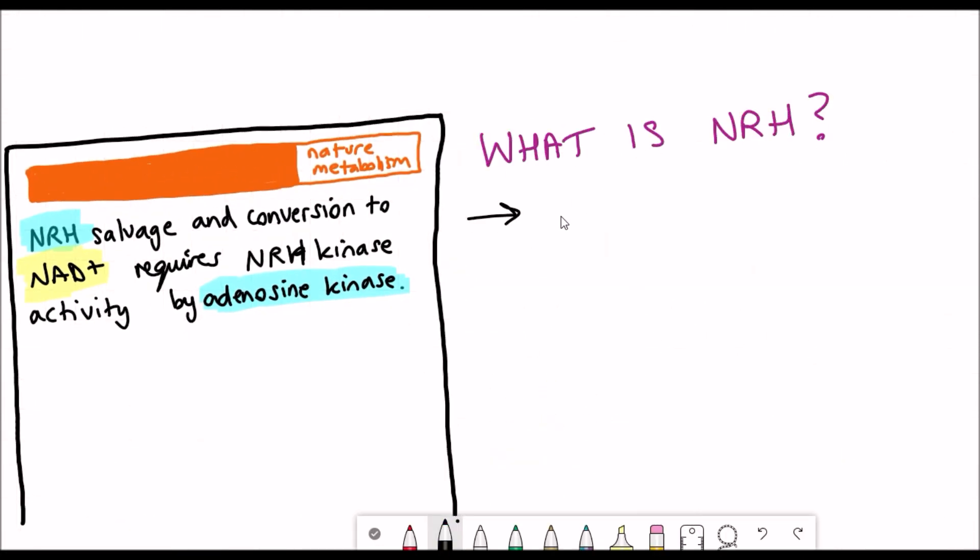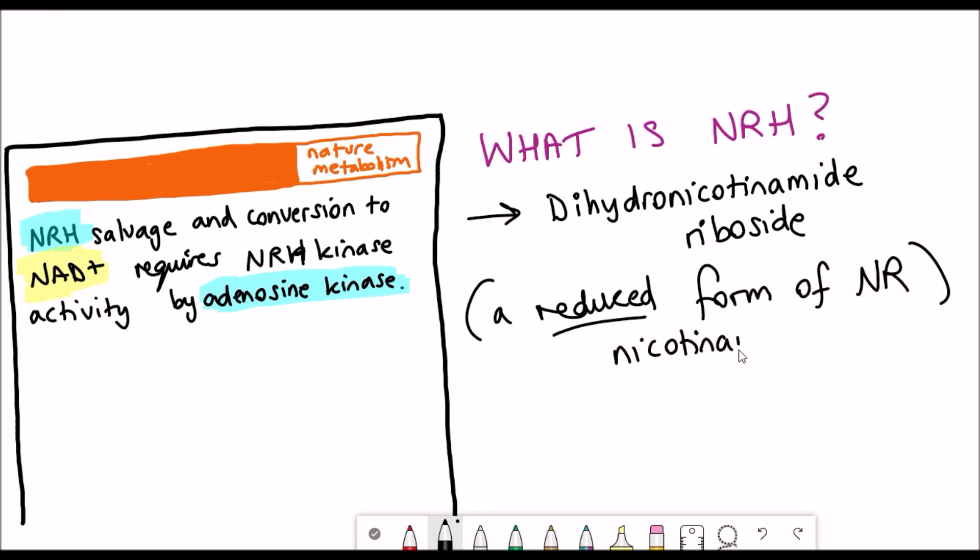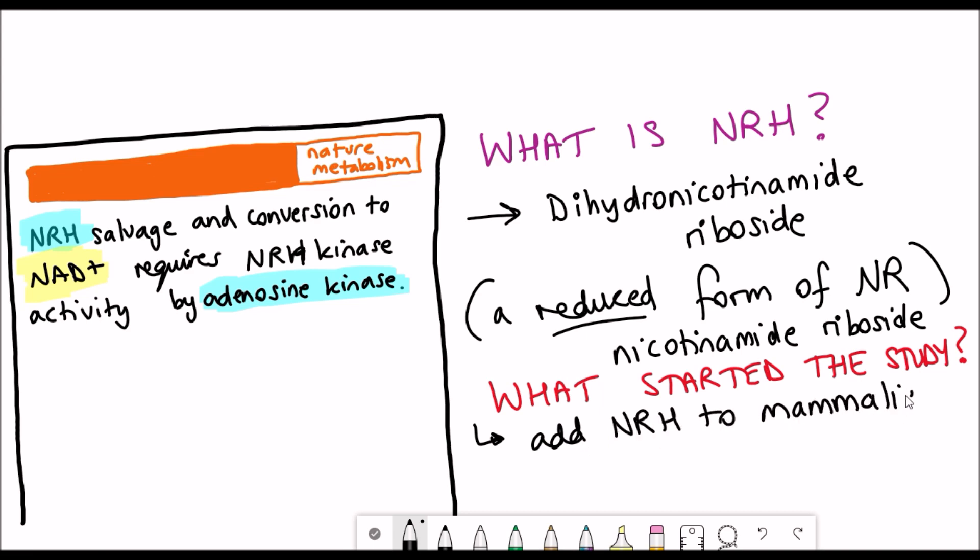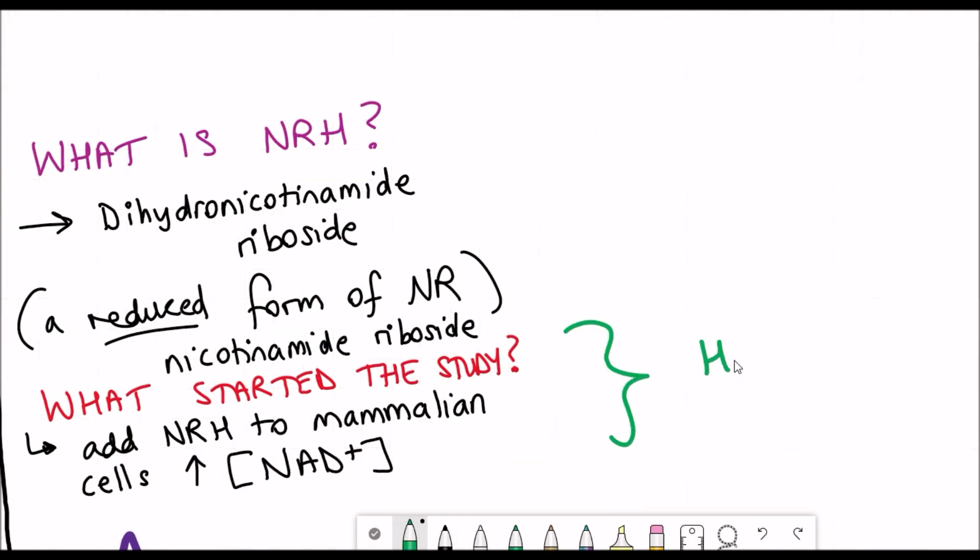So firstly, what is NRH? I've already mentioned it's dihydronicotinamide riboside, so it actually is just the reduced form of NR which you might have heard about as being one of the main supplements for increasing NAD plus levels. What started the study in the first place? Well, what they found was when they added NRH to mammalian cells, they saw a great increase in NAD plus levels, moreso than they've seen with adding nicotinamide riboside.